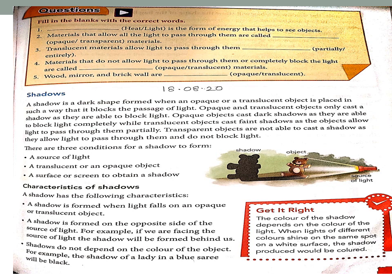What are the characteristics of a shadow? First: a shadow is formed only when light falls on an opaque or translucent object. Second: the shadow is formed on the opposite side of the light source. Wherever the light is, the shadow will be on the opposite side.